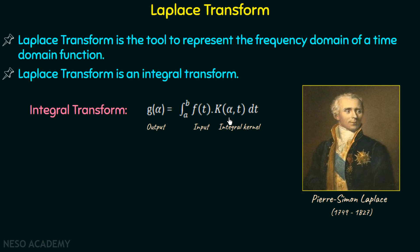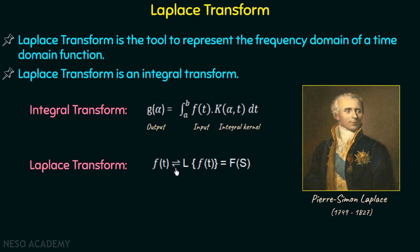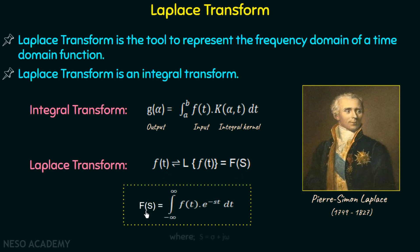The Laplace transform of any function f(t) is represented as L{f(t)} and is given as F(s), where F(s) is equal to the integral from minus infinity to infinity of f(t) multiplied by e to the power minus st dt. In this expression, s is equal to σ plus jω.